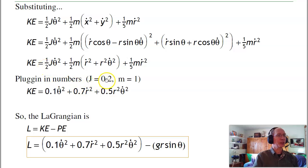Plugging in 0.2 for J and 1 for m, here's the kinetic energy. The Lagrangian then is kinetic energy minus potential energy. Here's the Lagrangian.